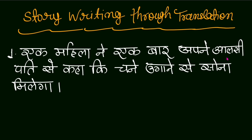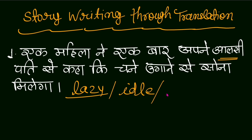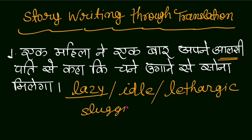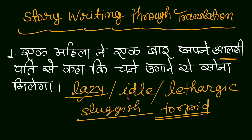Friends, here is another word. The simple word is 'lazy.' You can also say 'idle.' You can also say 'lethargic.' And someone who is a bit slow, sluggish — you can call them 'sluggish.' And friends, 'torpid' is also used. So among these, lazy, idle, and lethargic are quite important words — in fact all the words are important.